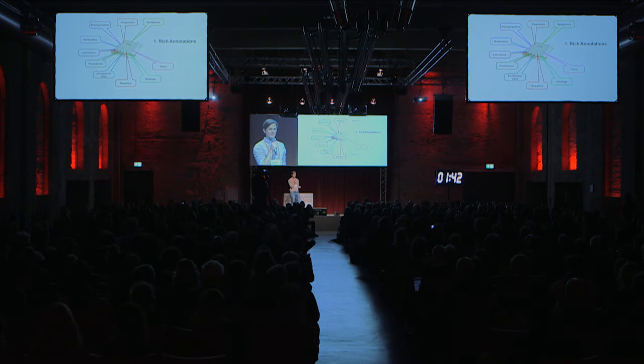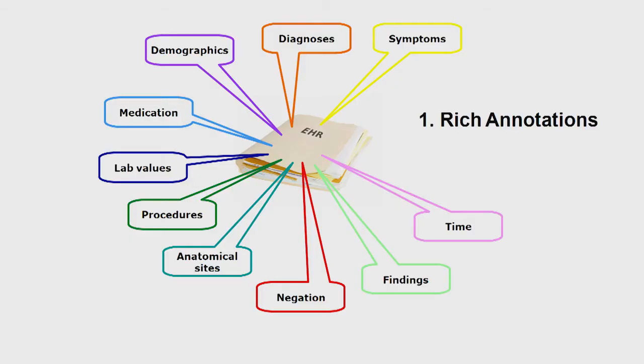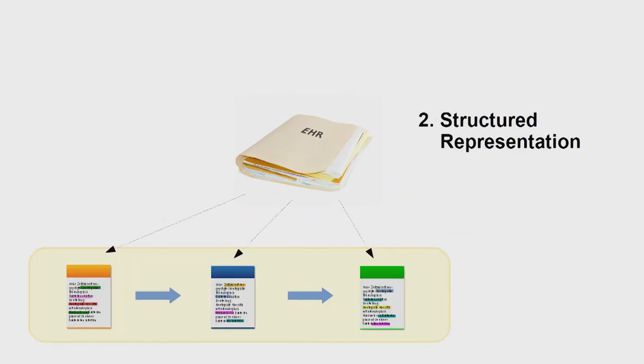That's exactly where we come in. We take a four-step approach where we first look at each individual electronic health record and add rich annotations, extracting clinically relevant entities such as diagnoses, findings, lab values, medications, anatomical sites, procedures, and negations of all of those. And especially by extracting mentions of time, we transform those bundles of documents into structured representations.